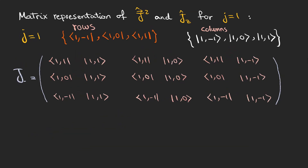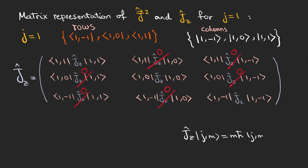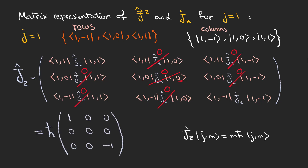For the z component of angular momentum, we should do the same thing with Jz. It doesn't change the kets, so all the non-diagonal elements are zero. The eigenvalues of Jz are mh-bar, so the middle element is 0 because m is 0, and the matrix can be written with two non-zero elements.